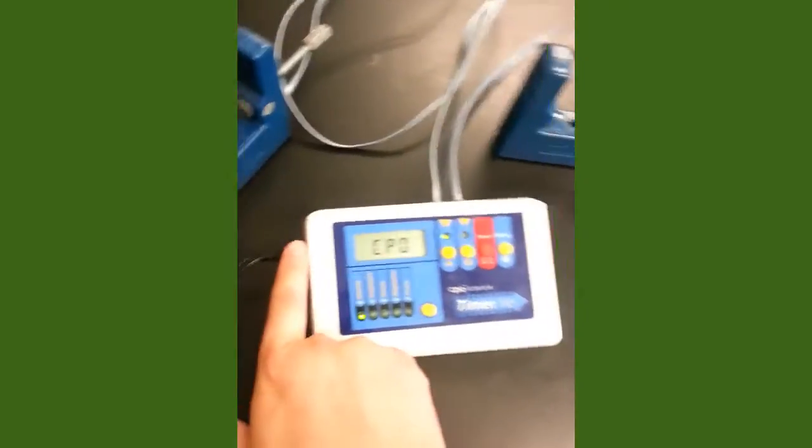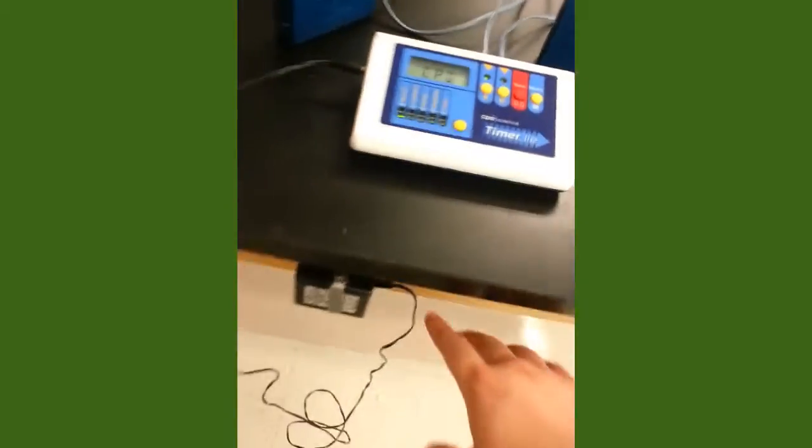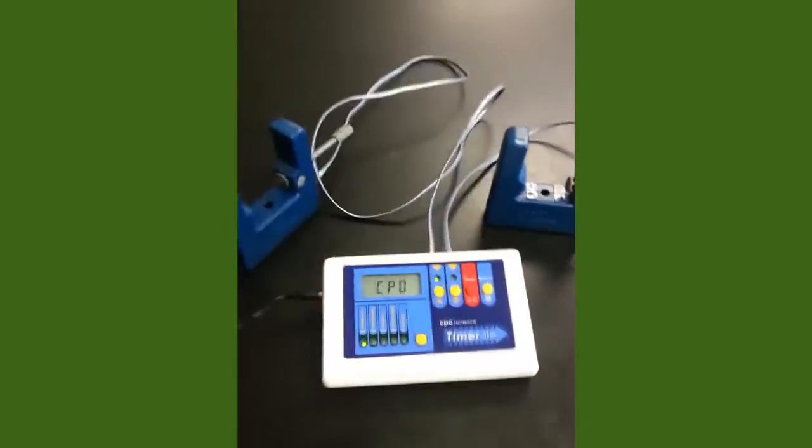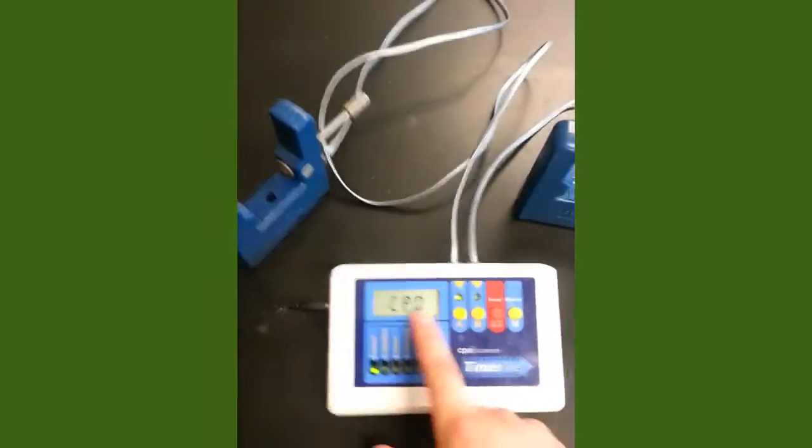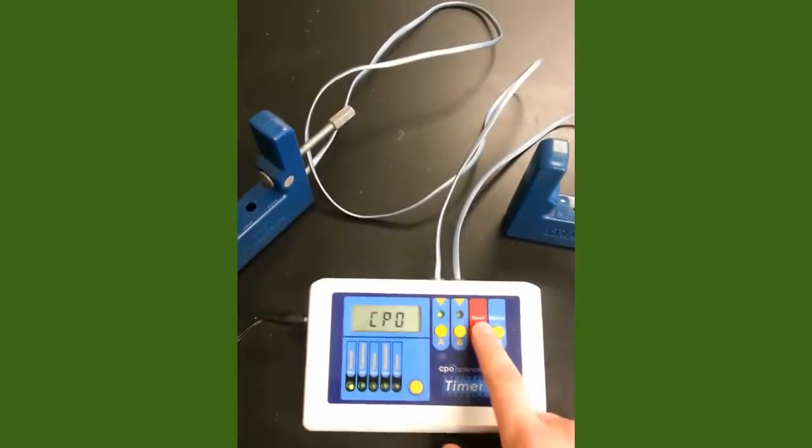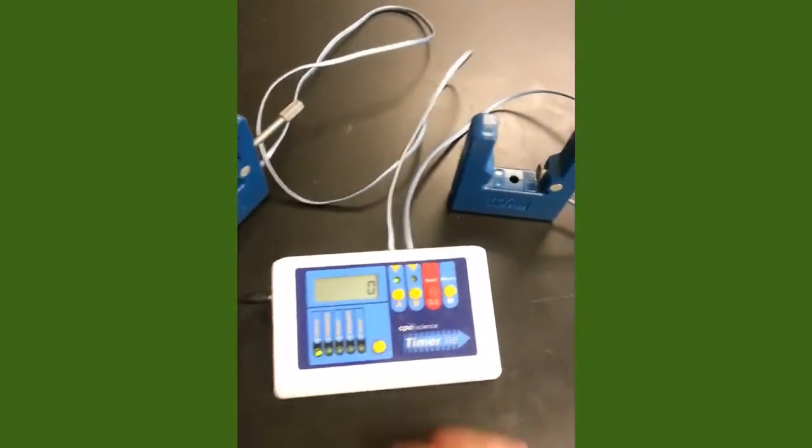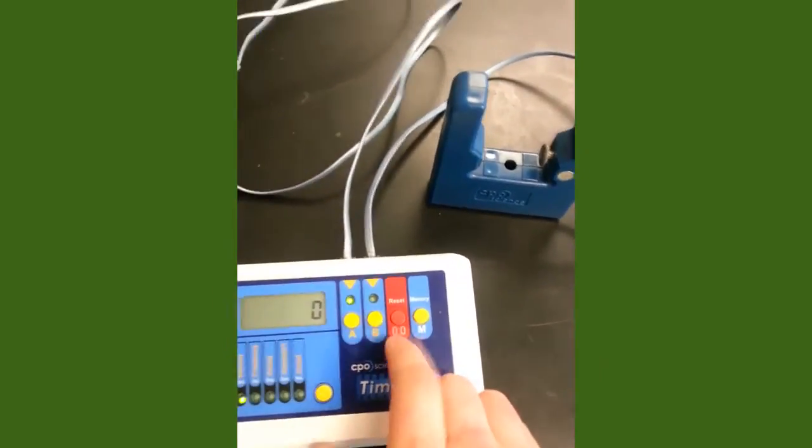So the first thing you are going to want to do is plug it in right in here and then the other goes into a regular old wall socket right here. The first thing you are going to see is it says CPO. You are going to want to hit reset. Reset this thing to zero. Reset is the red button right in here.